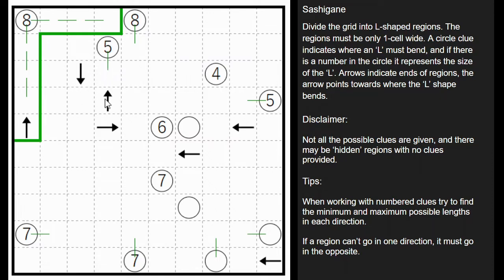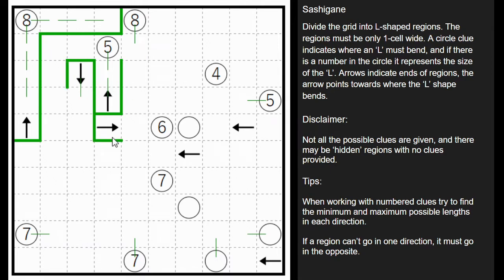You can do the same with the arrows. The cell below an arrow is going to be part of that region. This one is going to go up. You can see this five runs into this arrow, so you can tell that region is going to form like that. This one's going to bend like this. This arrow is the end of one — you can see that goes like that. This six can't go to the right and run into another elbow, so it must come to the left, and that meets up with that arrow.